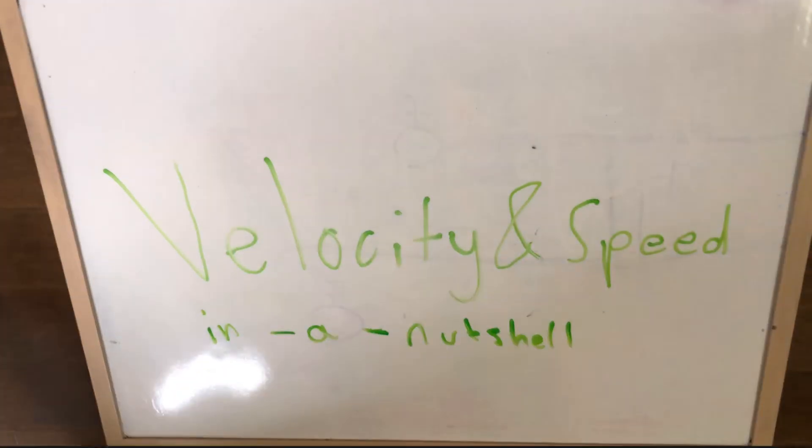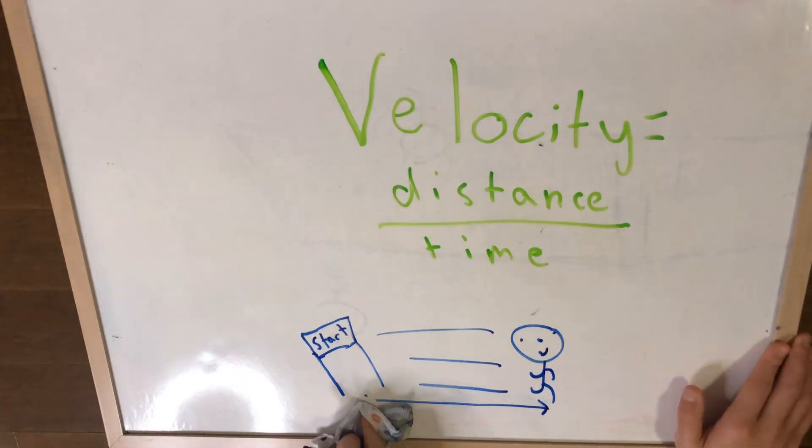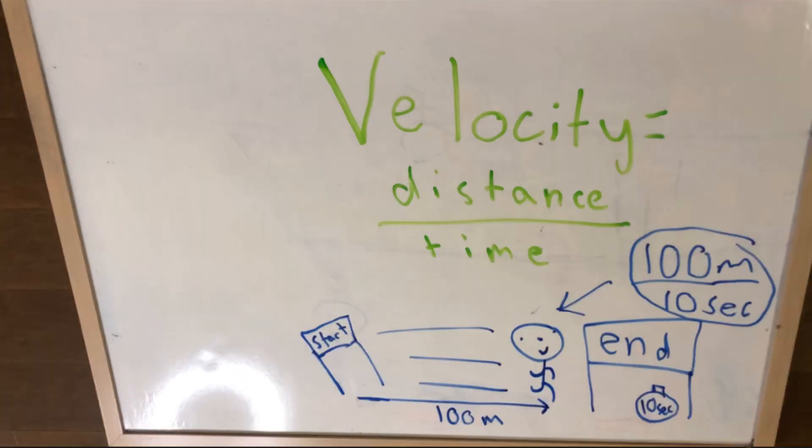Here is velocity and speed in a nutshell. Velocity is the distance you travel over the time it took to travel that distance. For example, if you ran a 100 meter dash in 10 seconds, then your velocity is 100 meters over 10 seconds.